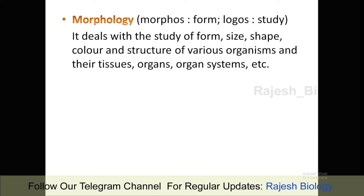For example, the liver has a specific shape, and the heart has a specialized shape. The hepatic lobule is hexagonal in shape. So morphology deals with the study of form, size, shape, and color of various organisms, including their organs and tissues.